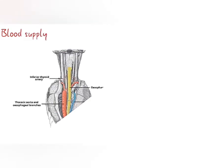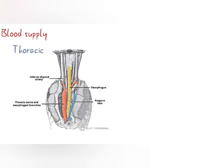Let's see the blood supply. Blood supply in the thoracic region is by the thoracic aorta and inferior thyroid artery. Its venous drainage is by branches of the azygous vein and inferior thyroid vein.